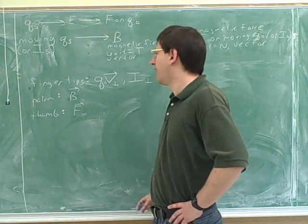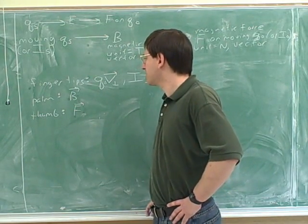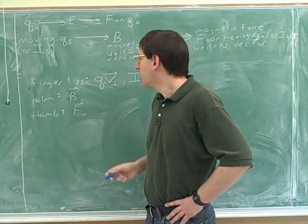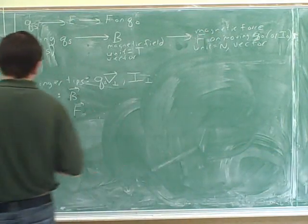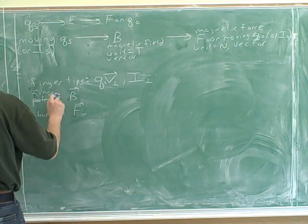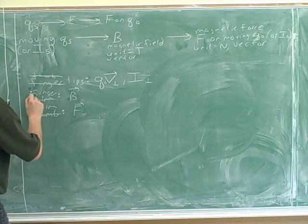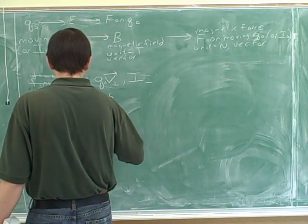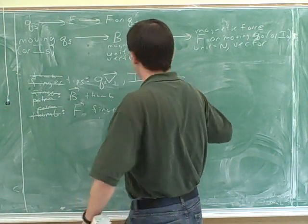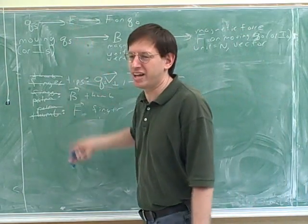Just to warn you, this is a very popular version of the right-hand rule, but there are other ones used as well. You don't need to use the same right-hand rule as your TA — you just have to use one that gives you the right answer. You can rearrange which quantity maps to finger, palm, or thumb, and that's one reason why lots of people tend to use different right-hand rules. The best thing is just to have one and stick with it.